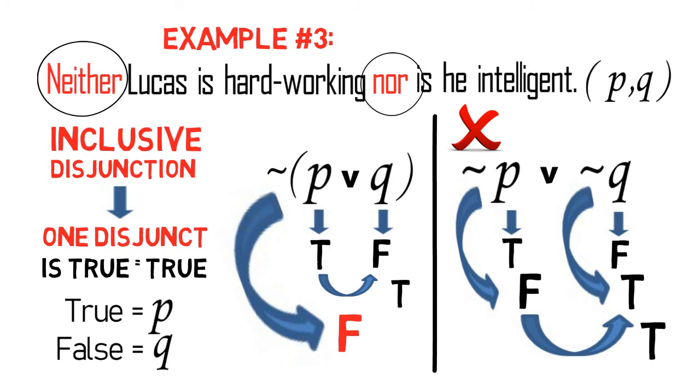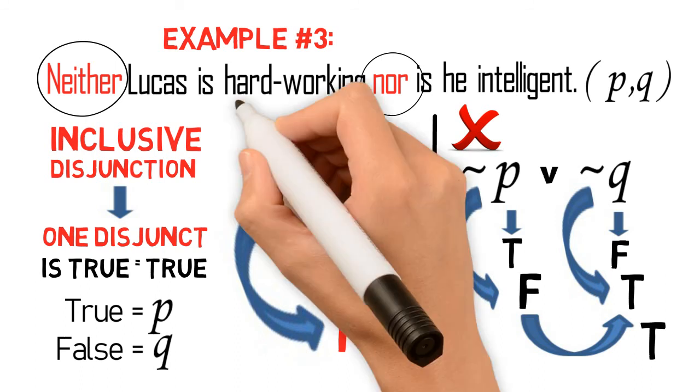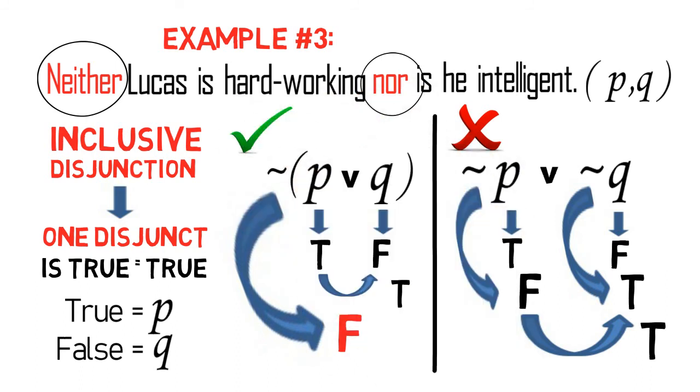Thus, at the end of it all, the proper symbol for the proposition Neither Lucas is hardworking nor is he intelligent is ~(P v Q), not ~P v ~Q.